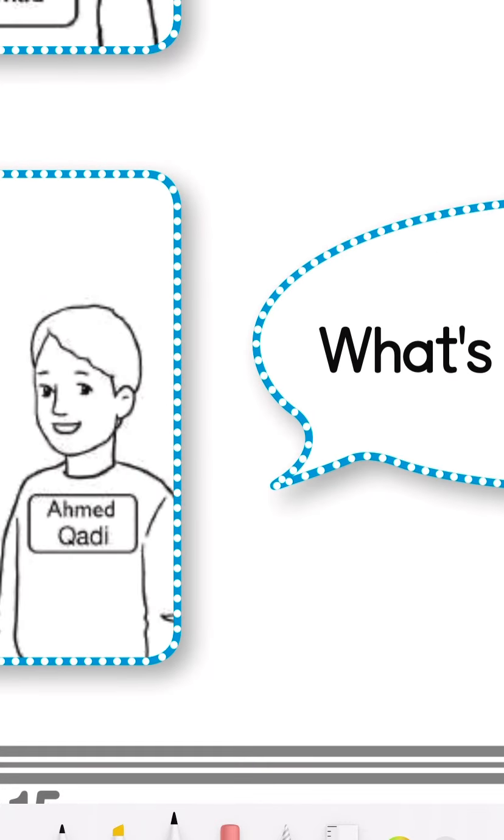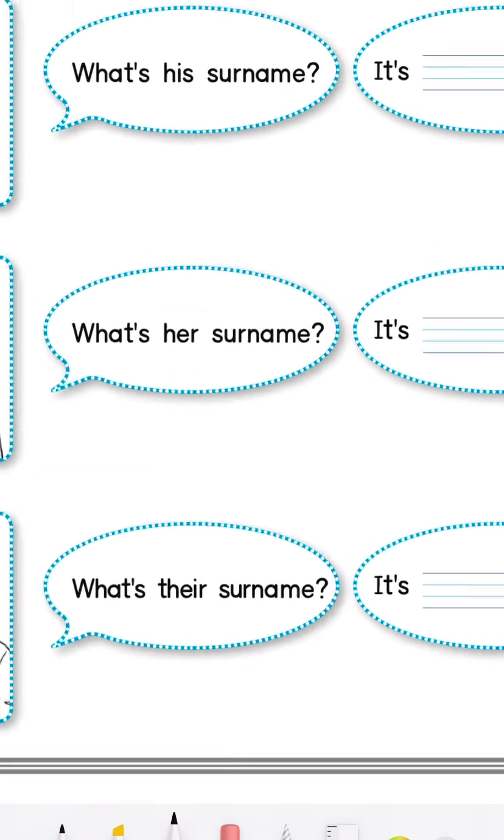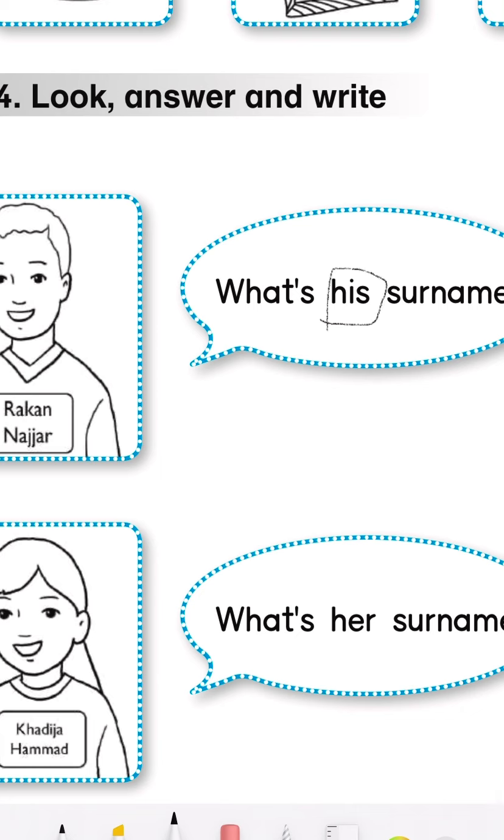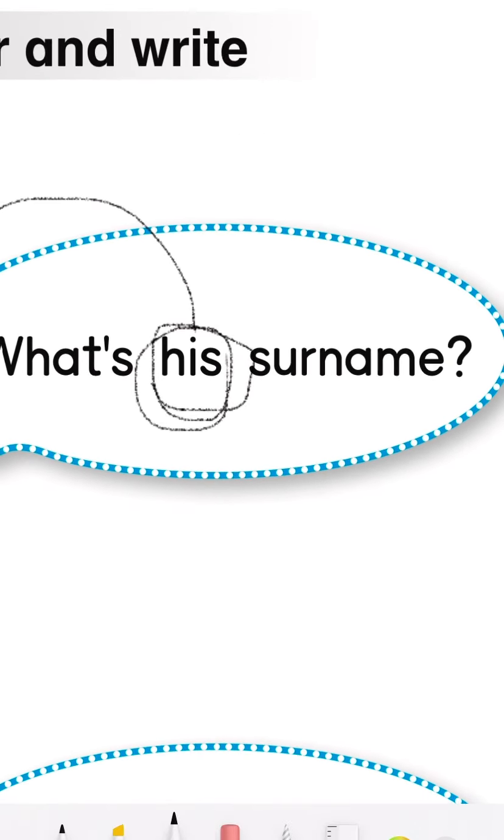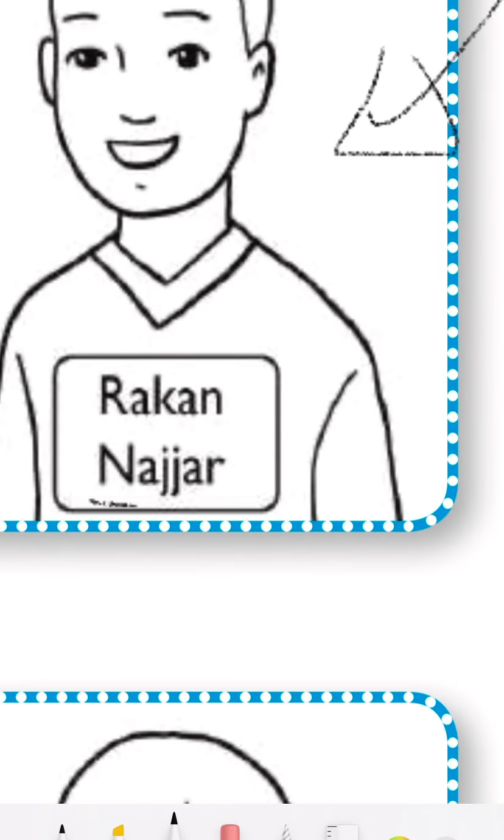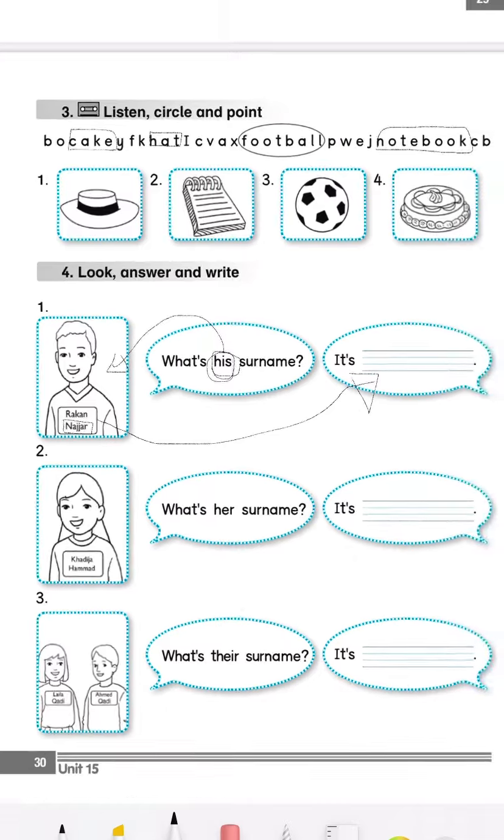Now, here, look here. We are going to write their surnames. What's his surname? Because it's a boy, it's a singular boy, we say his. What's his surname? Let's put a circle on his. We're asking about one boy. What's his surname? His surname is Najjar: N-A-J-J-A-R. You have to write it here.